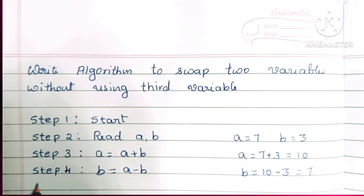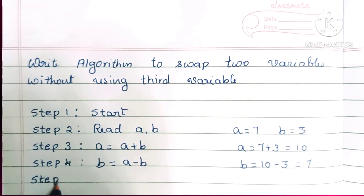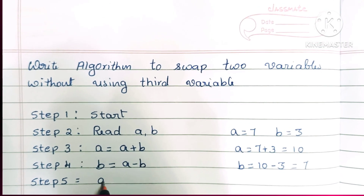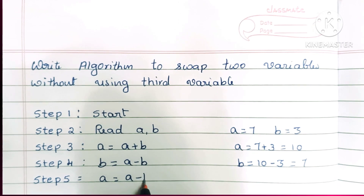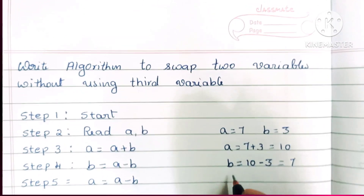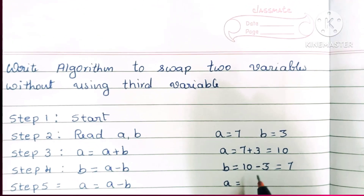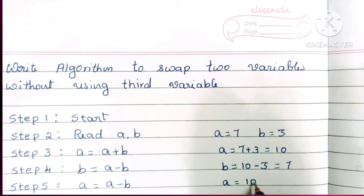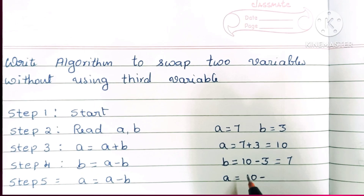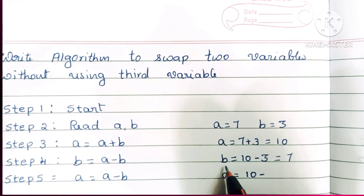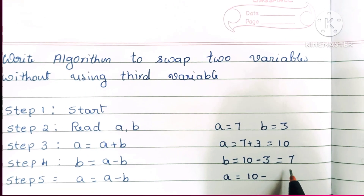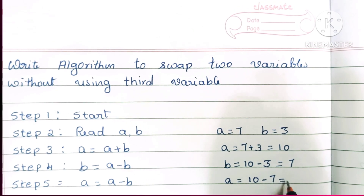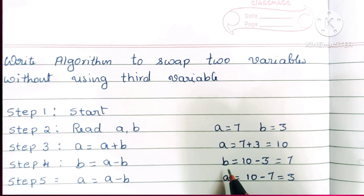In step 5, we calculate a is equal to a minus b. The current value of a is 10 and the current value of b is now 7, so 10 minus 7 equals 3. So now a holds the value 3.